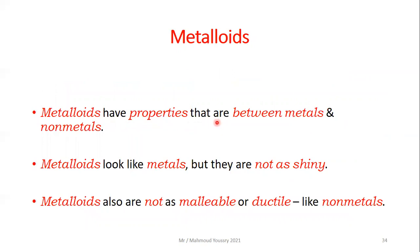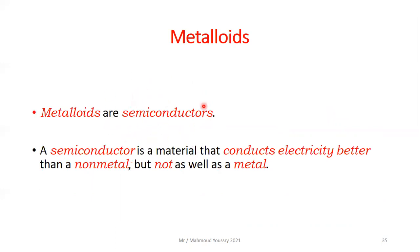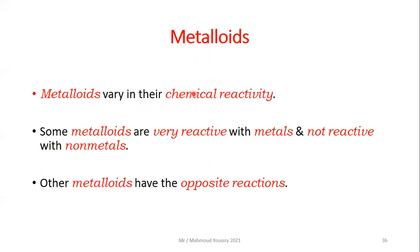Metalloids have properties between metals and non-metals. They look like metals but are not as shiny, and unlike metals they are not as malleable or ductile. Metalloids are semiconductors — the prefix 'semi' means partially. A semiconductor is a material that conducts electricity better than a non-metal but not as well as a metal. Metals are good conductors, non-metals are poor conductors, and metalloids are in between.